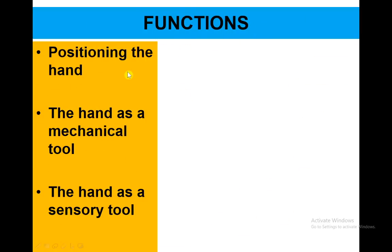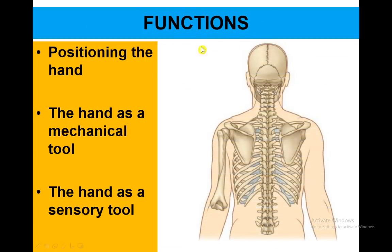Functions: the upper limb functions in positioning the hand in the air. The hand acts as a mechanical tool — we can perform a lot of functions with it. And the hand also acts as a sensory tool — we also feel with it.